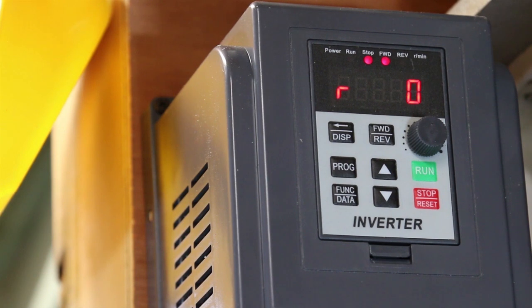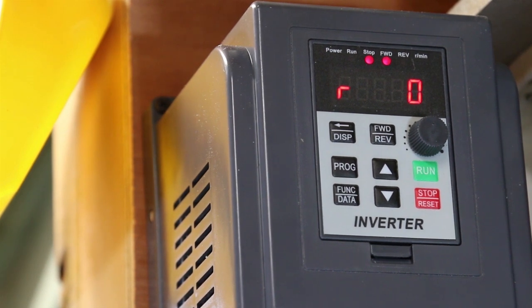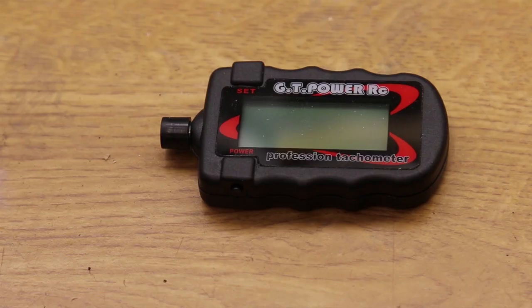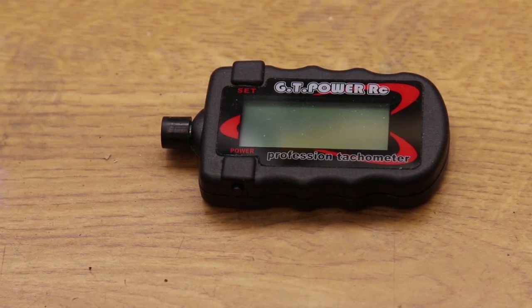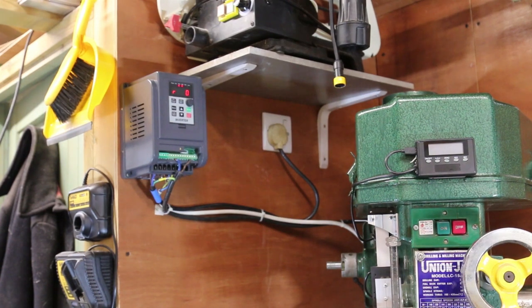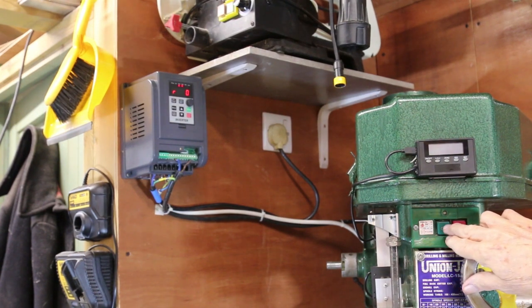I programmed the front panel to give the RPM of the spindle. I did this using a model tachometer. As you will see if I start the machine.